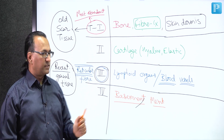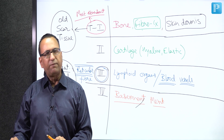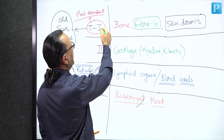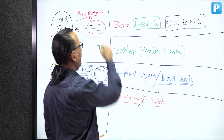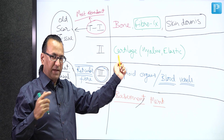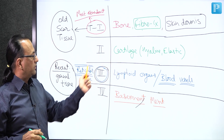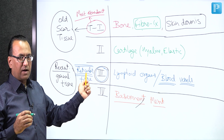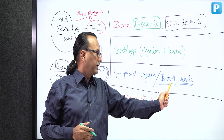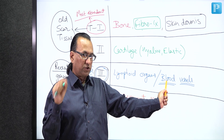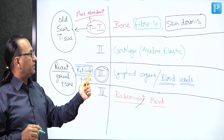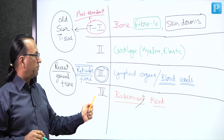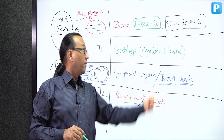Collagenopathies: osteogenesis imperfecta involves compromised type 1 collagen, causing brittle bones and spontaneous fractures. A problem with type 2 collagen leads to chondrodysplasia and cartilage disorders. Type 3 collagen pathology causes weakness in organs - the vascular type of Ehlers-Danlos syndrome involves aortic aneurysm due to compromised type 3 collagen. Type 4 collagen pathology leads to Alport syndrome with glomerulonephritis, as the basement membrane of the glomerulus is affected.